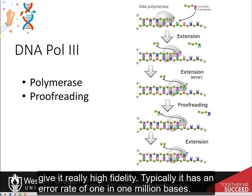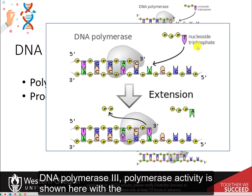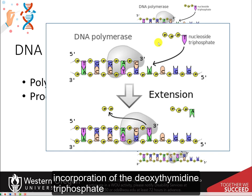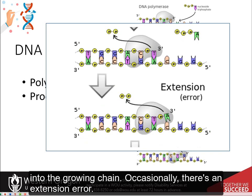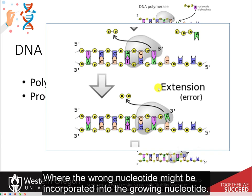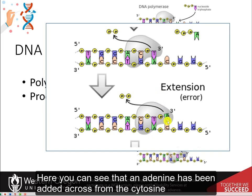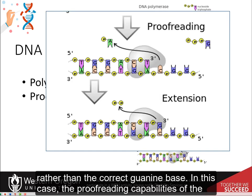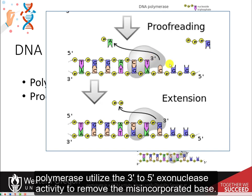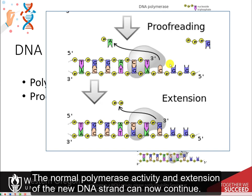Typically, it has an error rate of 1 in 1 million bases. DNA polymerase 3 polymerase activity is shown here with the incorporation of deoxythymidine triphosphate into the growing chain. Occasionally, there's an extension error where the wrong nucleotide might be incorporated into the growing strand. Here you can see that an adenine has been added across from a cytosine rather than the correct guanine base. In this case, the proofreading capabilities of the polymerase utilize a 3' to 5' exonuclease activity to remove the misincorporated base, and normal polymerase activity and extension of the new DNA strand can then continue.